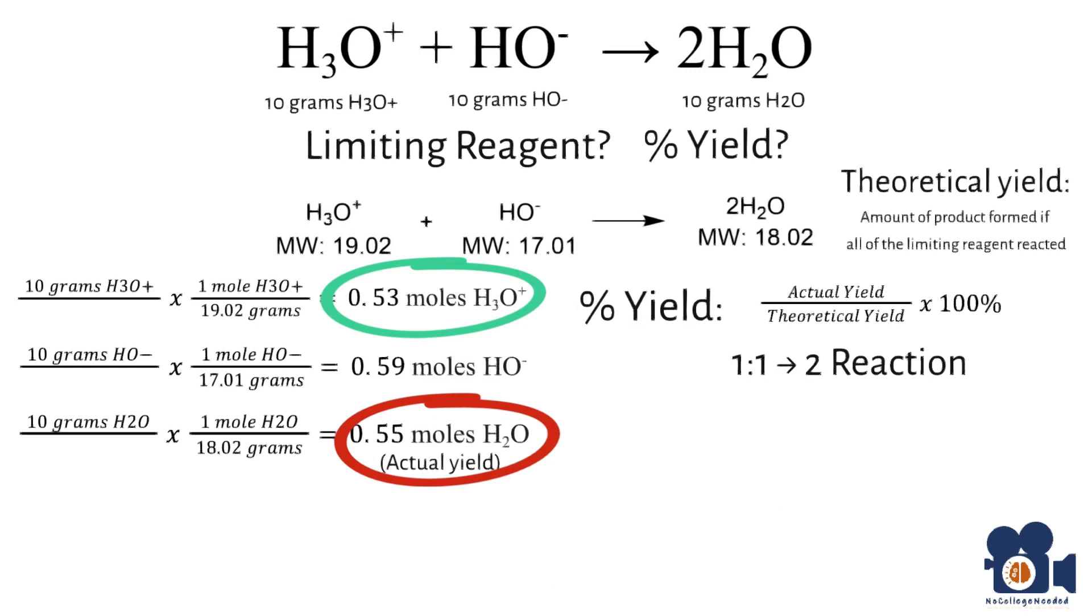Next is your actual yield, which is 0.55 moles of H₂O. The math looks like 0.55 divided by 0.53 times 2 times 100% equals 51.9% yield.